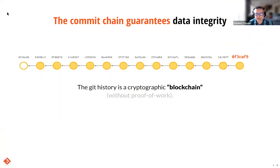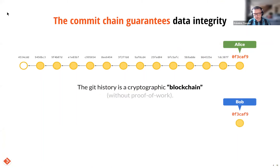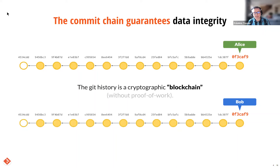So a Git repository is in fact a cryptographic blockchain, which guarantees data integrity. Imagine Alice is working on her computer on a project on commit 0F3CAF9 — whatever — and Bob elsewhere in the world is working on a project on the same commit hash. This implies that Alice and Bob know immediately, at a glance, that they are working on exactly the same files, even if there are thousands of them. Not only the same files, but also the same history of changes all the way back to the initial commit. If that were not the case, the commit IDs would differ back to the point of first divergence.